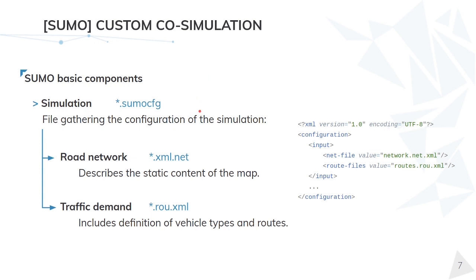The SUMO CFG file is a file gathering all the configuration of the simulation and it is mainly composed of two different files. The SUMO network is a file defining the static environment — it is like an OpenDRIVE file but in another format. Then we have the traffic demand, which can be defined through route files and contains the definition of vehicle types and the routes for each vehicle to be spawned during the simulation. Here we can see a basic configuration file which contains references to the SUMO network and the SUMO routes. We will now go through an example showing all the necessary steps to run a custom co-simulation between CARLA and SUMO.